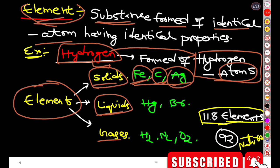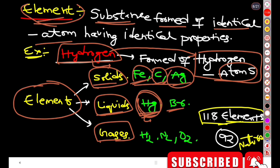We also have mercury and bromine as liquid elements. Mercury is used in thermometers and is known as a liquid metal. Bromine is another liquid element. For gaseous elements, we use hydrogen, nitrogen, and oxygen.